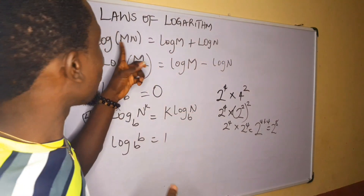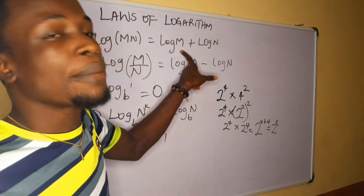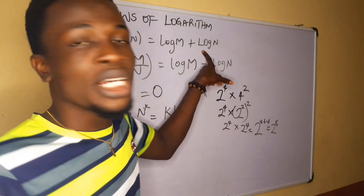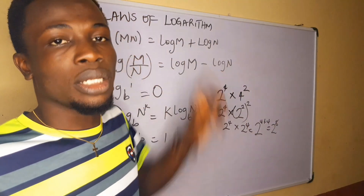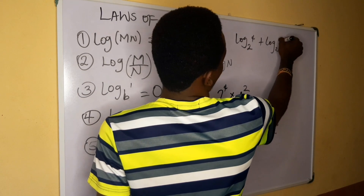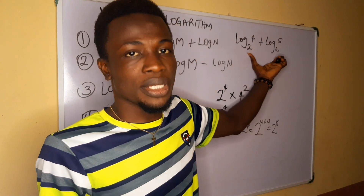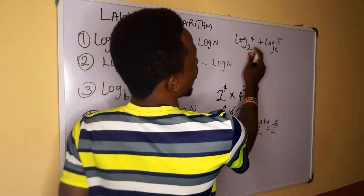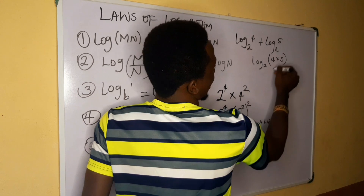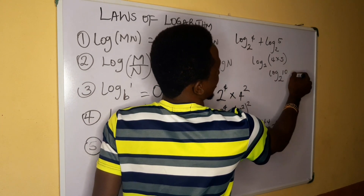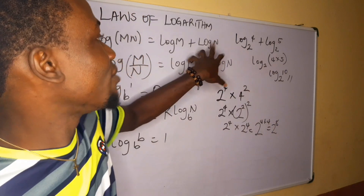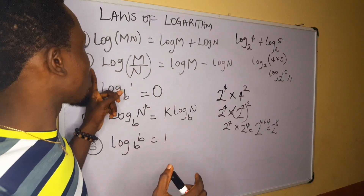The first law of logarithm states that log of m·n equals log m plus log n. So if you are given two logs with the same base, you multiply the individual numbers. For example, log base two of four plus log base two of five — since both have the same base two, you pick one base and multiply the numbers: log base two of (4 × 5) = log base two of 10. Addition of logarithms with the same base means multiply the numbers.